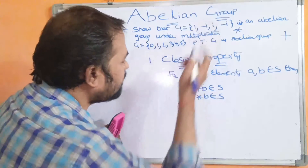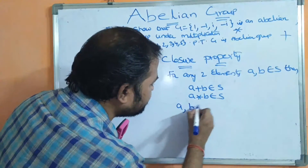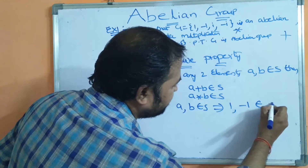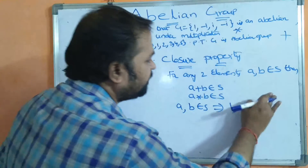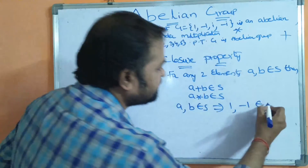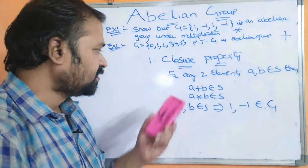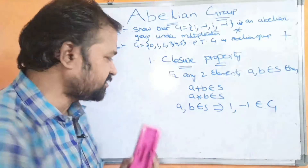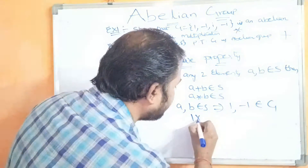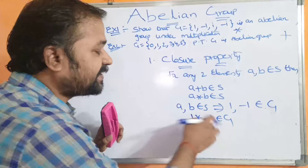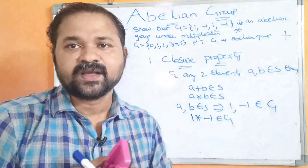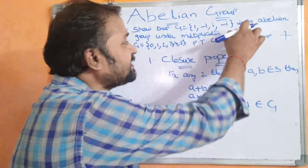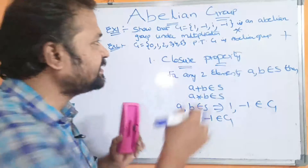Let us solve whether these two examples satisfy closure property. For Example 1, take A = 1, B = -1, so 1 and -1 belong to G. We perform 1 ★ (-1) — that is, multiplication — and the result is -1. Since -1 is present in the group, we can say that closure property is satisfied.